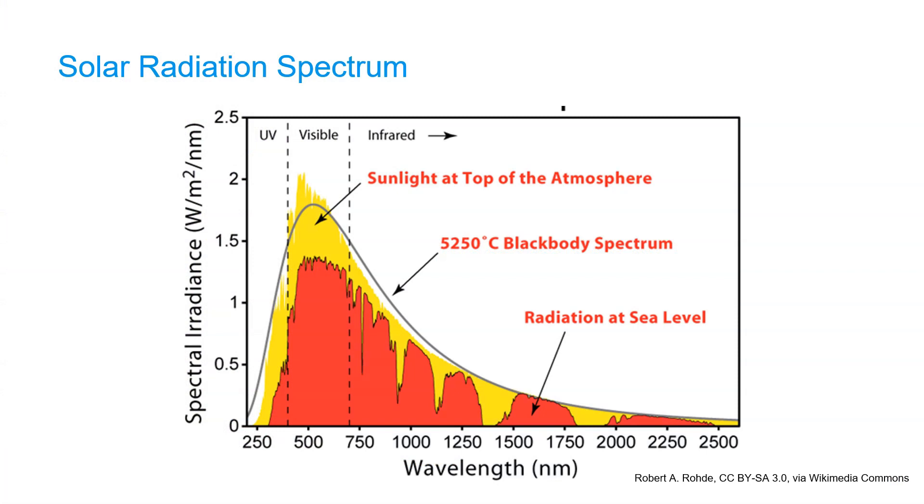Before we go to Earth, let's have a look at our own star, the Sun. With the temperature of the Sun of 5250 degrees Celsius, we can construct the black curve, which is a black body spectrum.